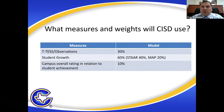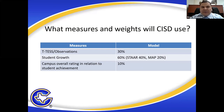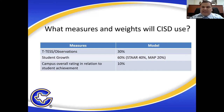What measures and weights will the district use in identifying the data, which will ultimately designate teachers as recognized, exemplary, and master? T-TESS observations carry 30% of the weight in our model, done by your principals. Student growth accounts for 60% — STAR at 40% and MAP at 20%. And then campus overall rating as it relates to STAR is 10%.